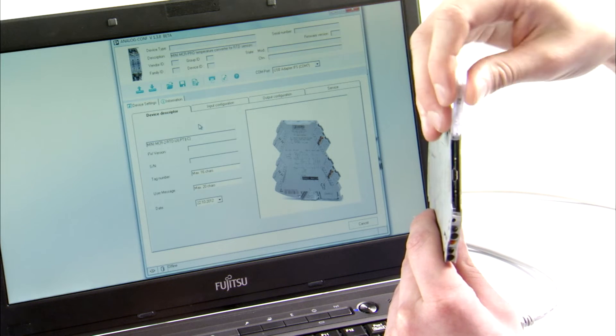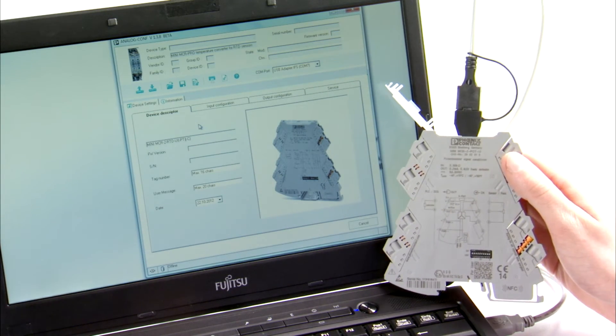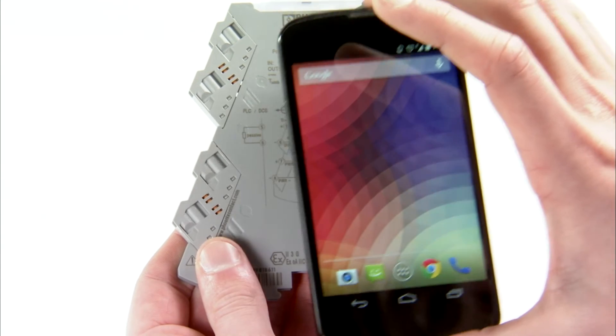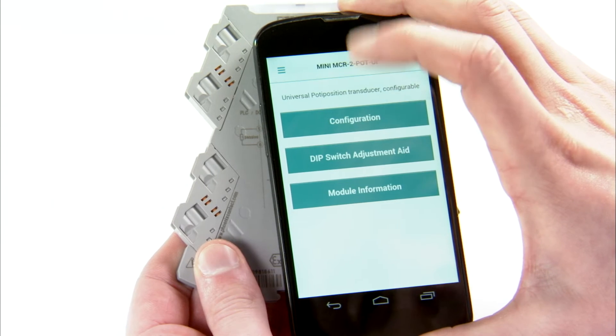Alternatively, the modules can be configured for even more functionality using a free software solution. A smartphone with near-field communication but without any further accessories can be used for wireless configuration.